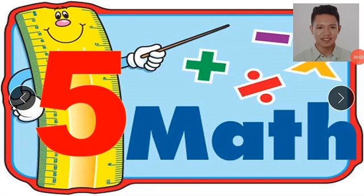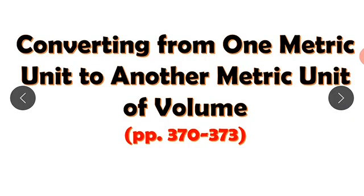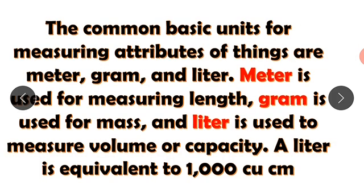Hello class, good morning. Our lesson for this week is converting from one metric unit to another metric unit of volume. The common basic units for measuring attributes of things are meter, gram, and liter. Meter is used for measuring length, gram is used for measuring mass, and liter is used to measure volume or capacity of an object.